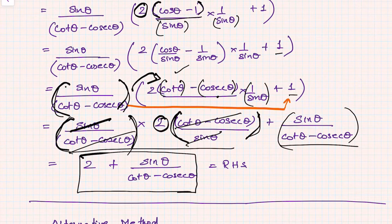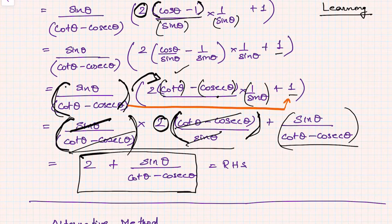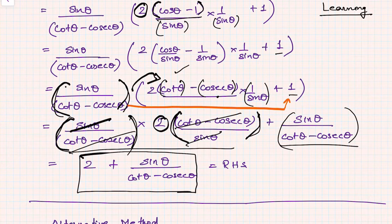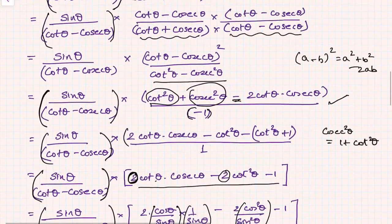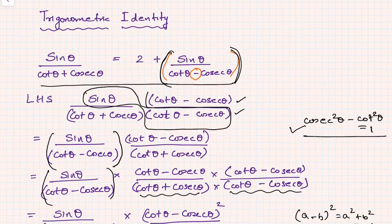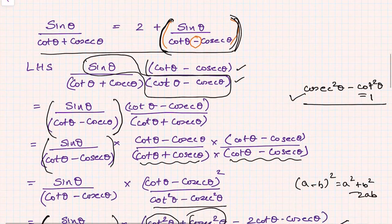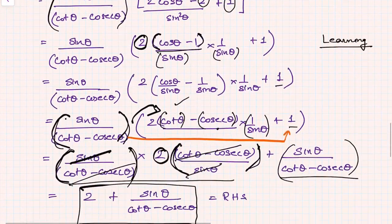The learning from Approach 1 is: keep track of exactly what is needed in the RHS. Try to get that in the LHS itself, then reduce the remaining terms and simplify until you get the desired result. Here, we purposefully inserted (cot θ - cosec θ) under sin θ to get one of the required terms, then kept simplifying the other half until it reduced to 2.